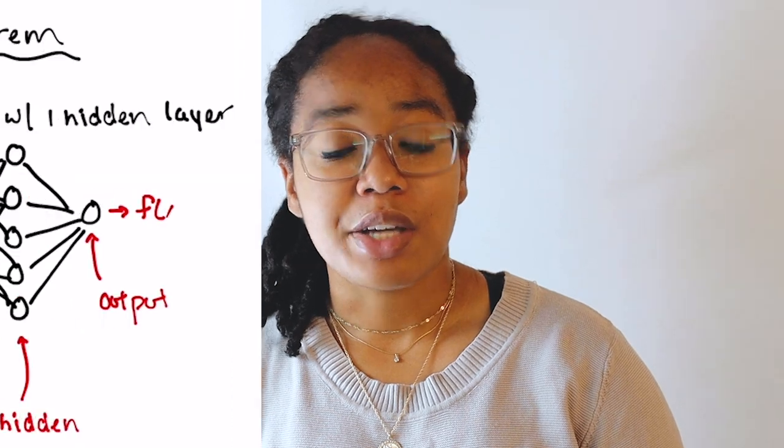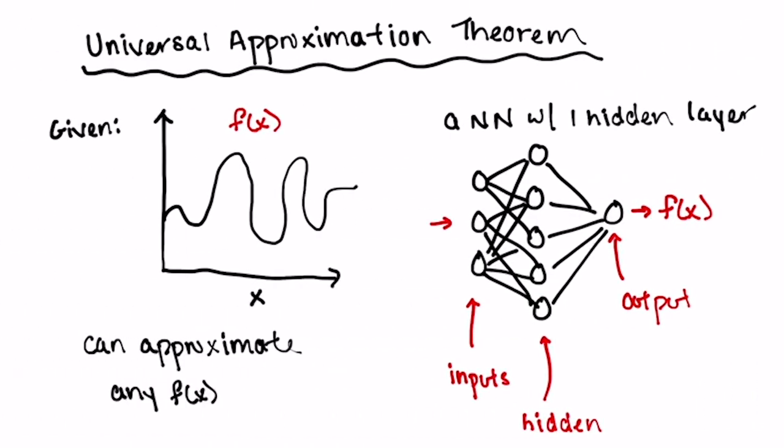When researchers were developing some of the first neural networks, they took inspiration from the ways that neurons in our brain weight different inputs and sum them to determine whether or not a neuron will fire. Several decades later, deep neural networks have become some of the most powerful machine learning models we have, due to both the advent of big data as well as something called the universal approximation theorem, which states that a neural network with one hidden layer can approximate any continuous function within a certain range.